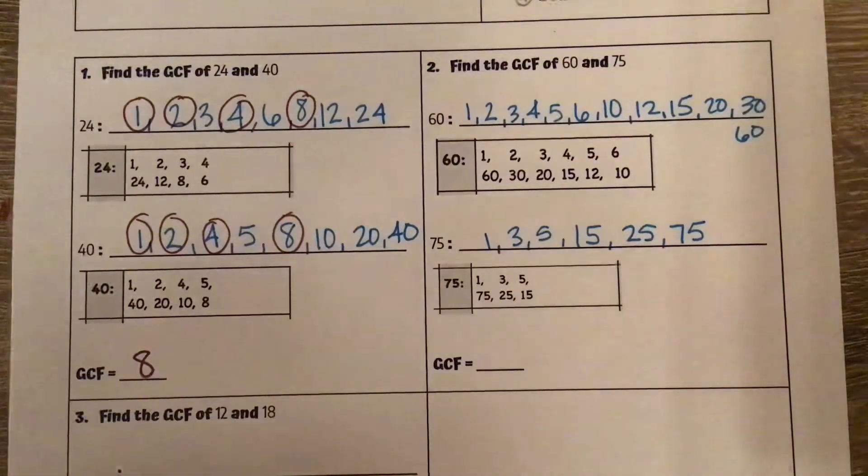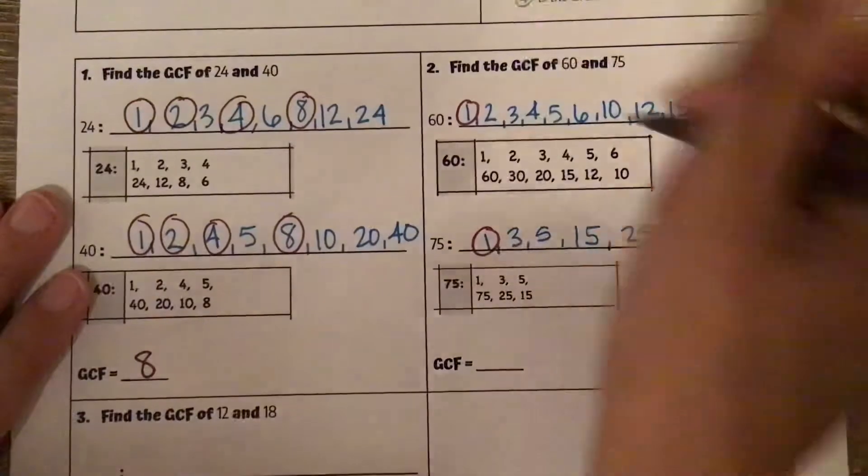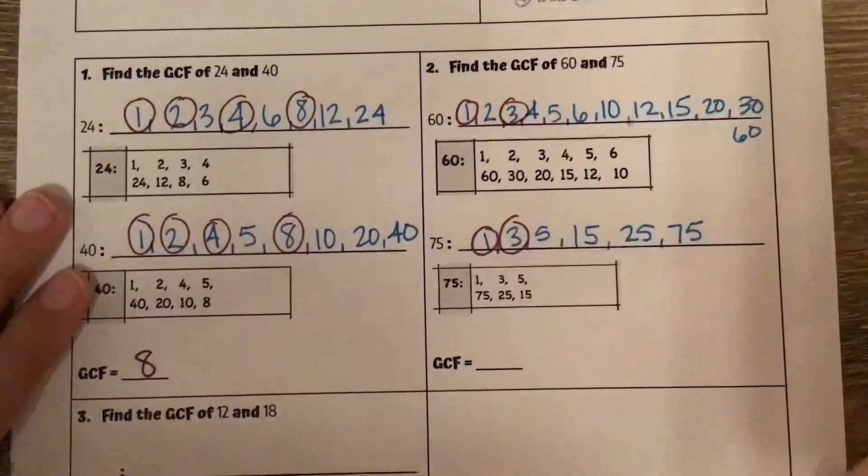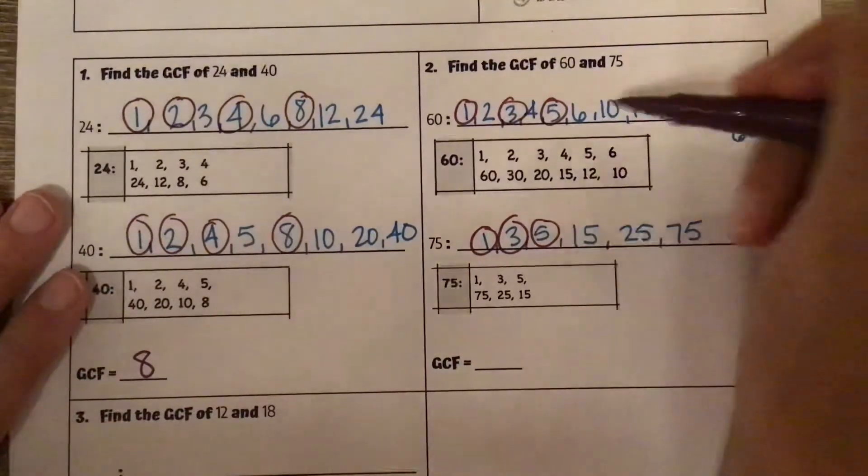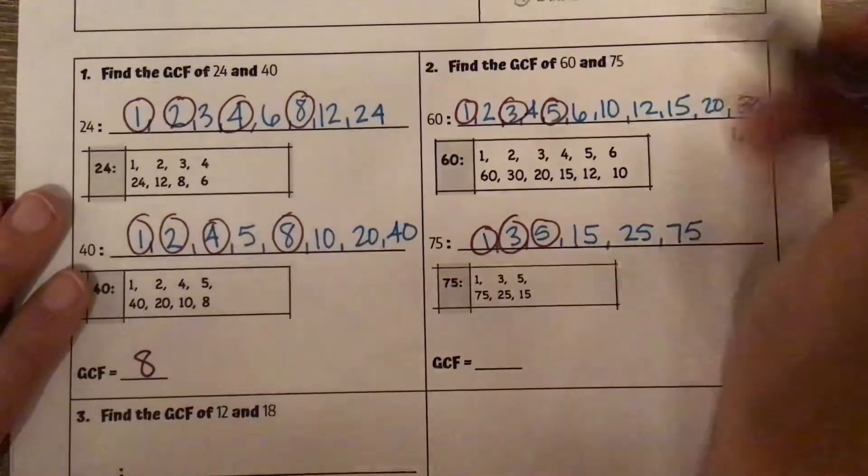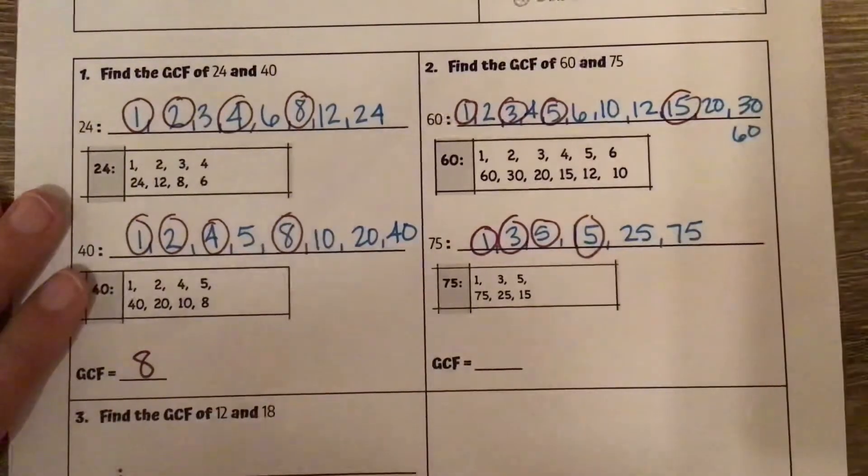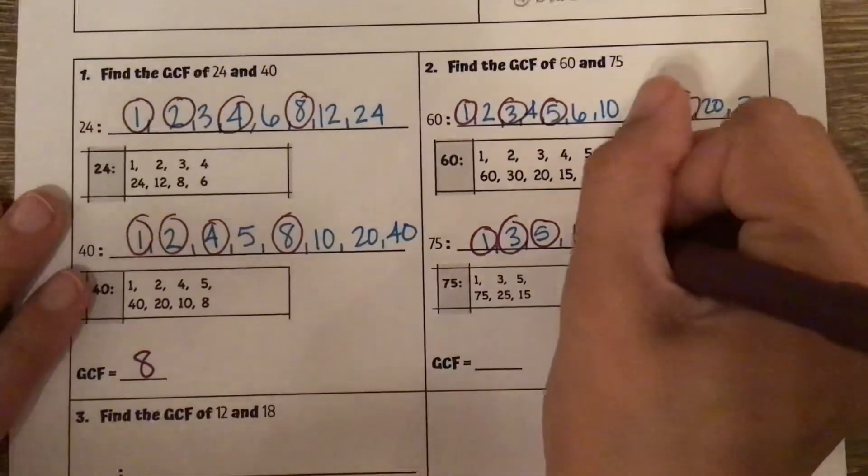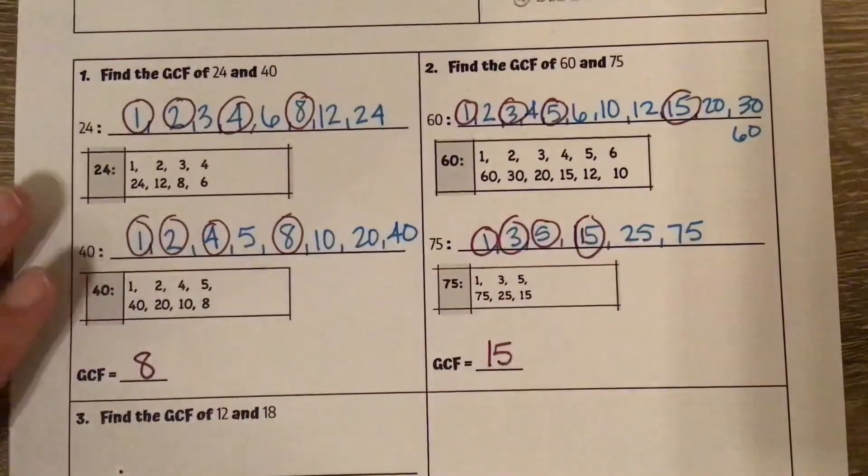I'm going to go through and circle those that are in common. So we've got 1, 3, 5, not 6, not 10, not 12, 15, not 20, not 30, not 60. So the highest one that they both share is 15. So their GCF is 15.